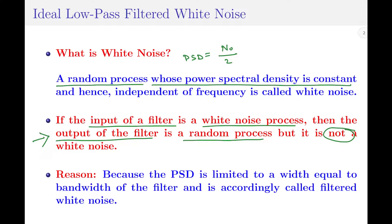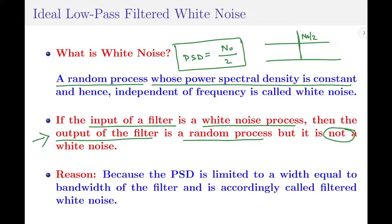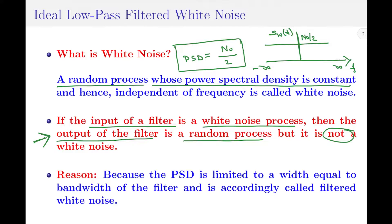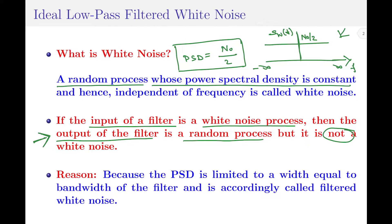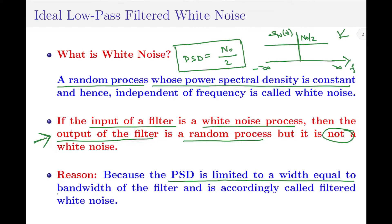The reason is pretty simple. As we previously said, the power spectral density of white noise is N₀/2 and is independent of frequency, so if I plot it, it is simply a flat line with amplitude equal to N₀/2, with frequency ranging from minus infinity to plus infinity. When I pass a white noise process through a filter, the PSD gets limited to a width equal to the bandwidth of the filter and therefore becomes band limited. Hence, we call the output filtered white noise and not white noise itself.